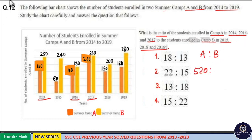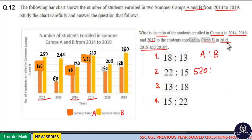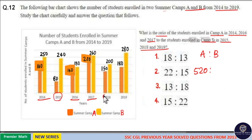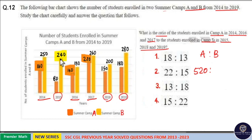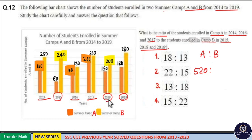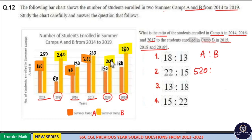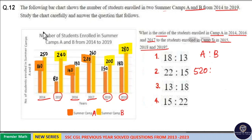Now for camp B in 2015, 2018, and 2019 — camp B is shown in yellow color. So 240 plus 200 plus 280: 280 plus 200 is 480, and 480 plus 240 is 720. So the total for camp B is 720 students.